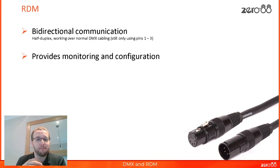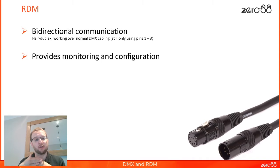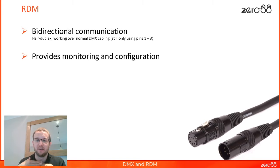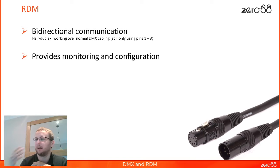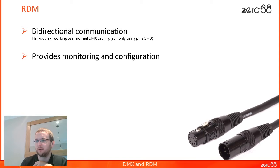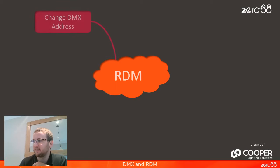RDM provides monitoring and it provides configuration — it does not provide control. We still use DMX to control our fixtures, to tell them be at 50%, point over there, be in red. But RDM can then say: change your DMX address, or what temperature is your lamp at? So let's have a quick look at the sort of things we can do over RDM — that monitoring and configuration.